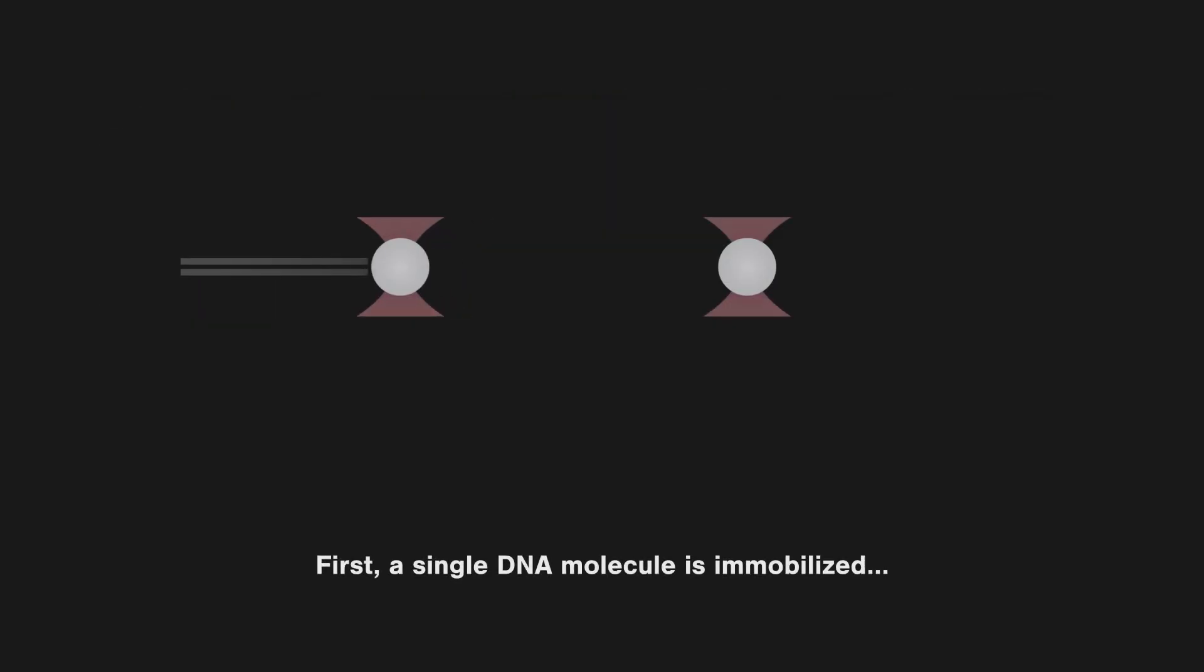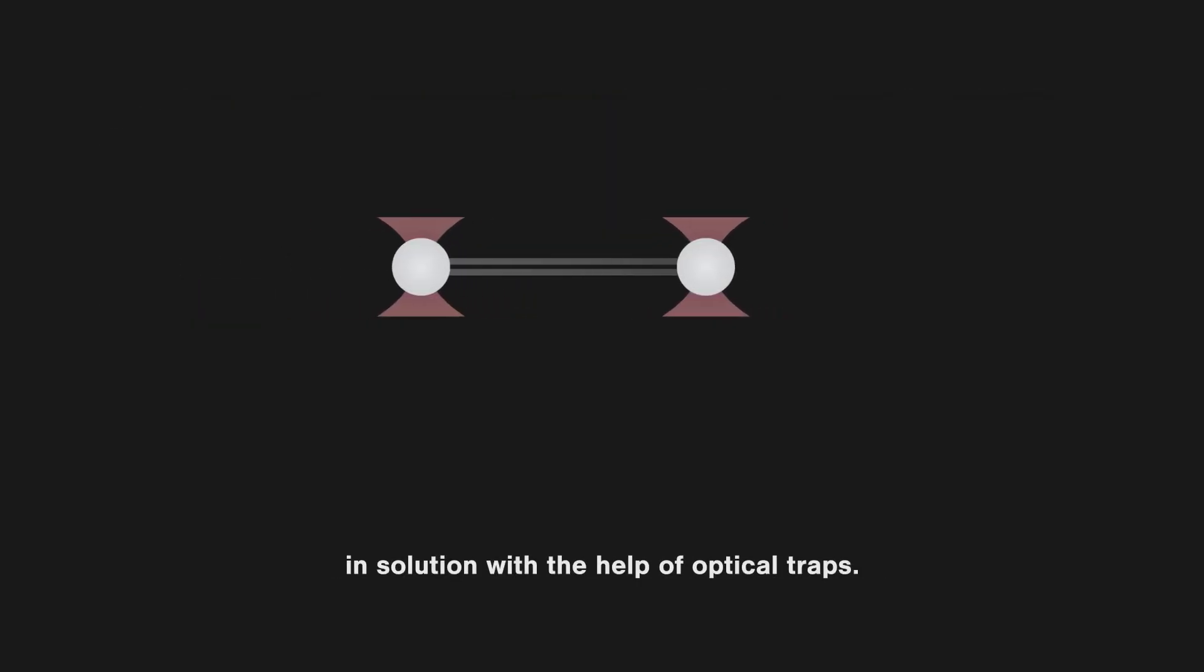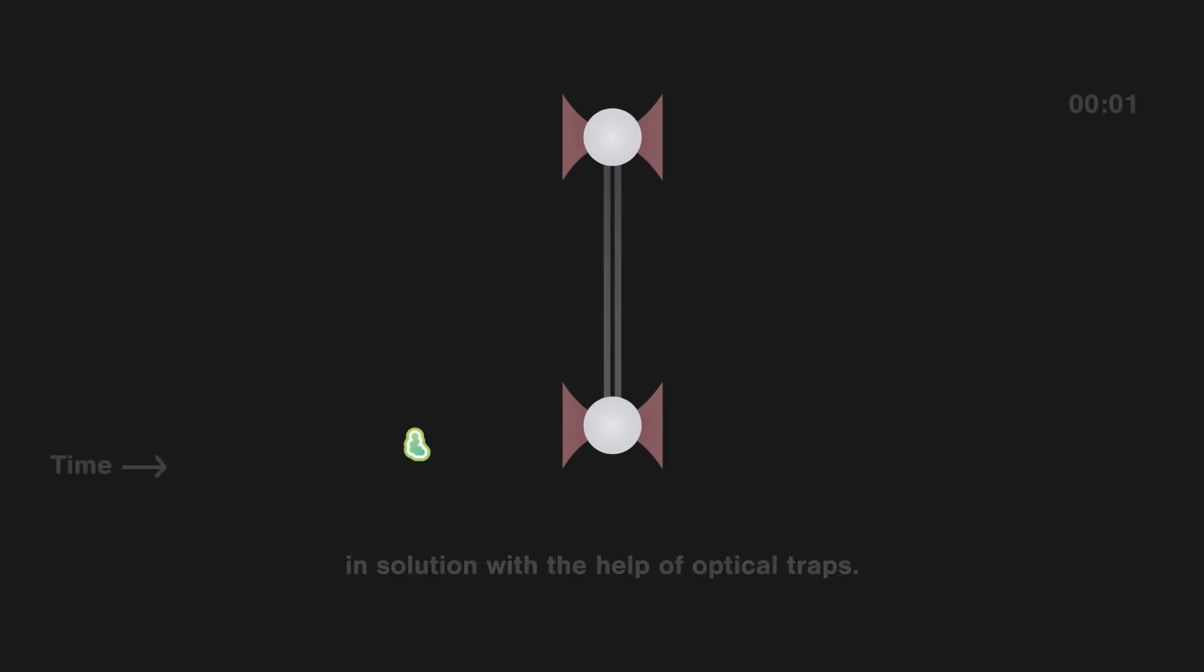First, a single DNA molecule is immobilized in solution with the help of optical traps. The DNA is then allowed to interact with fluorescently labeled proteins in the sample.